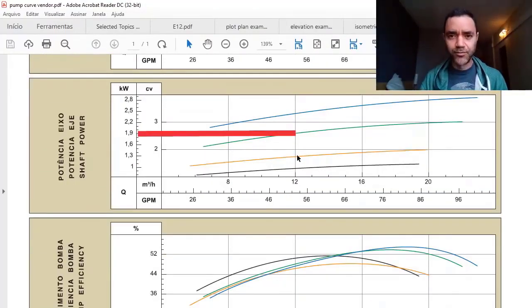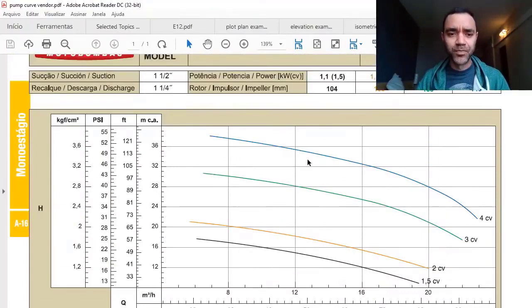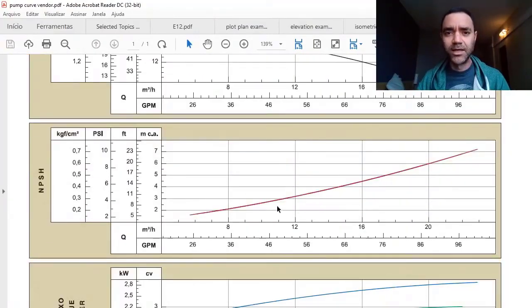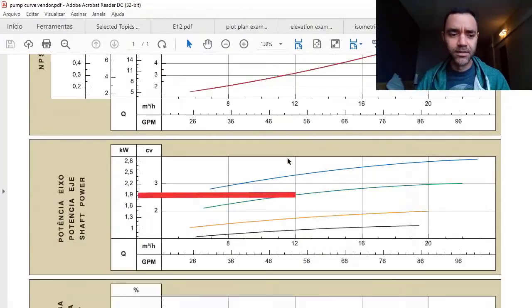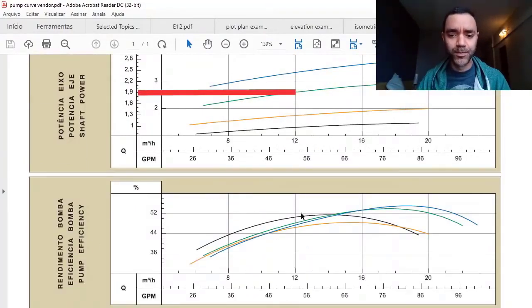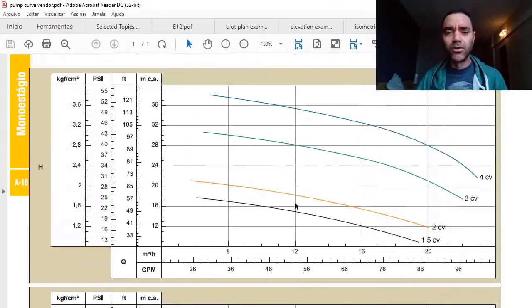You get the specifications to the vendor, the vendor will reply with a technical economical proposal, and one of the documentation that must be available to you is the pump curve. With the pump curve, you will verify the flow and head, you will verify the NPSH required, you will verify the shaft power needed for your pump, and you will verify the pump efficiency.